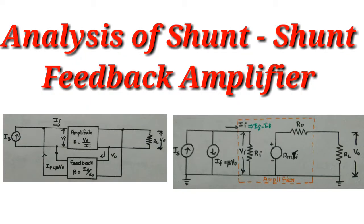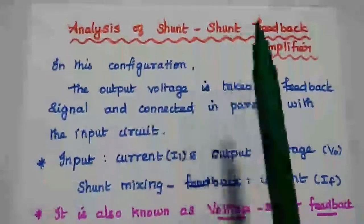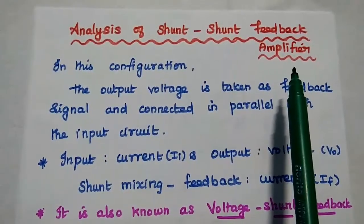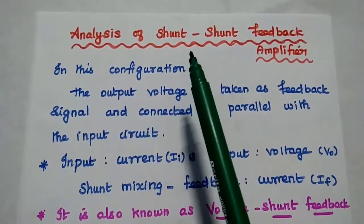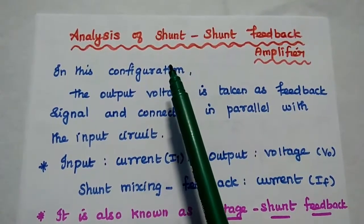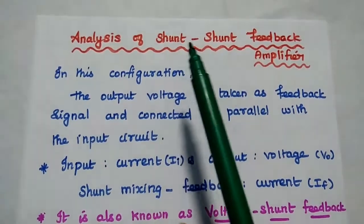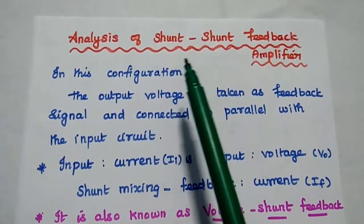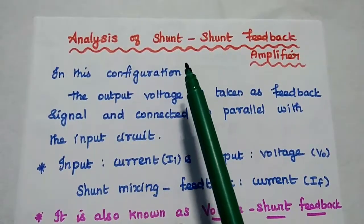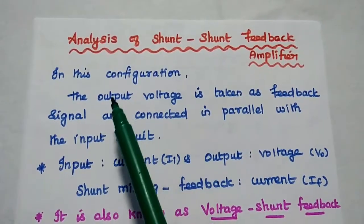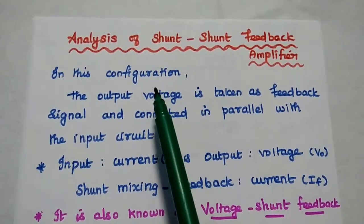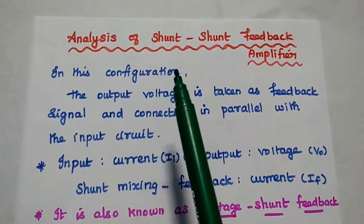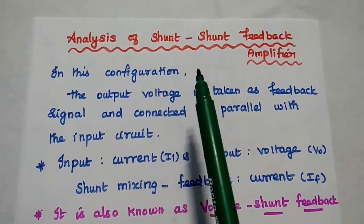Now we are going to analyze the shunt-shunt feedback amplifier in detail. In a shunt-shunt feedback amplifier, the first term represents the way of mixing the feedback signal with the input signal. In shunt mixing, the feedback signal is a current signal which is connected in parallel with the input signal. For shunt mixing, the input signal is a current signal and the feedback signal is also a current signal.